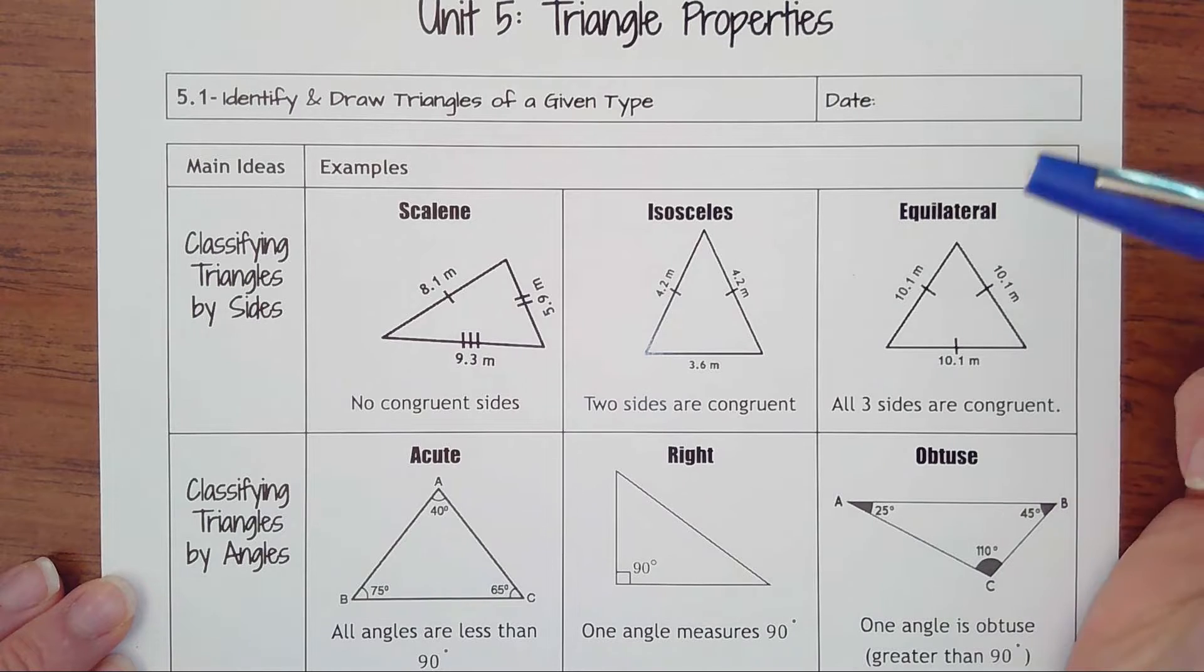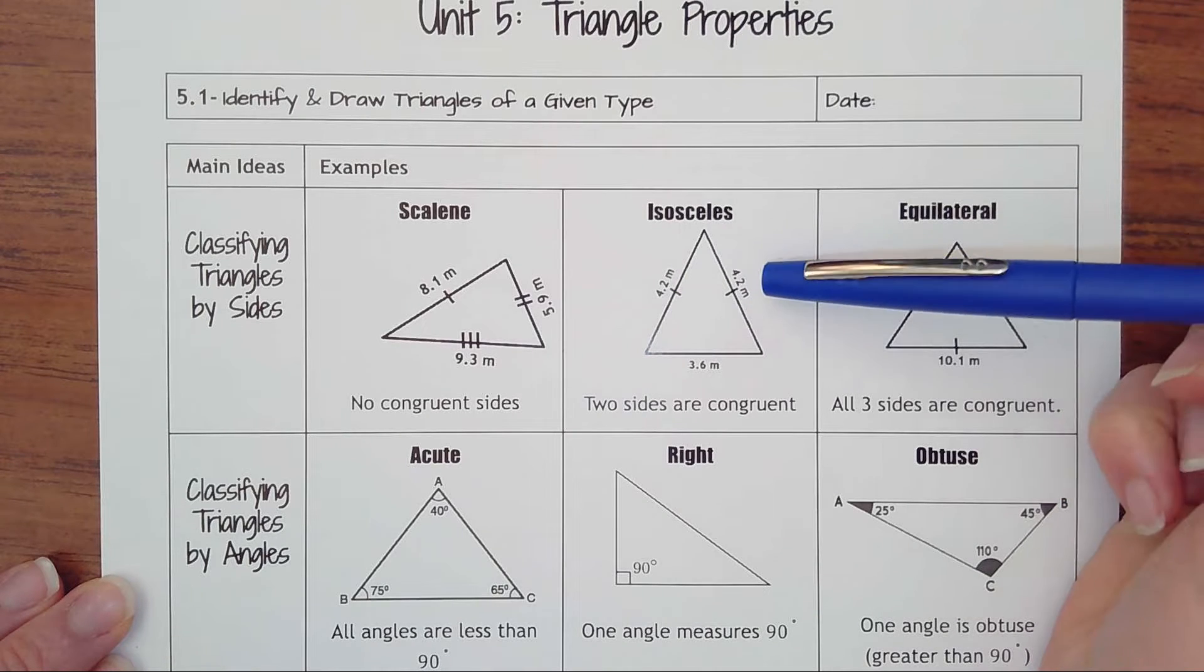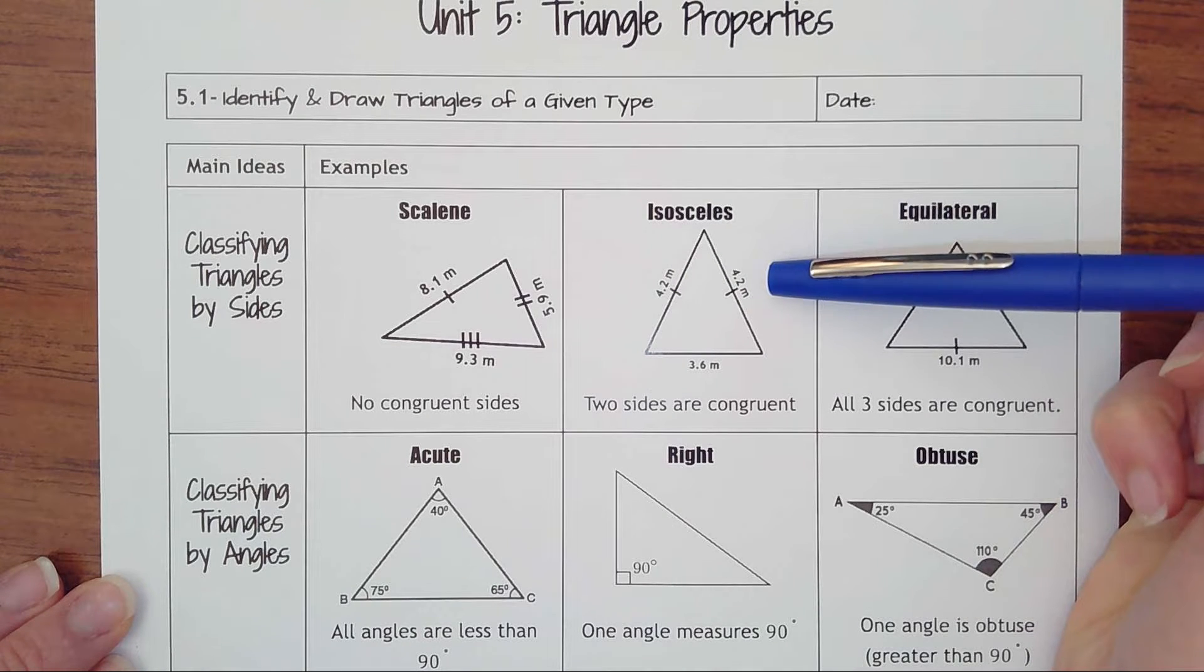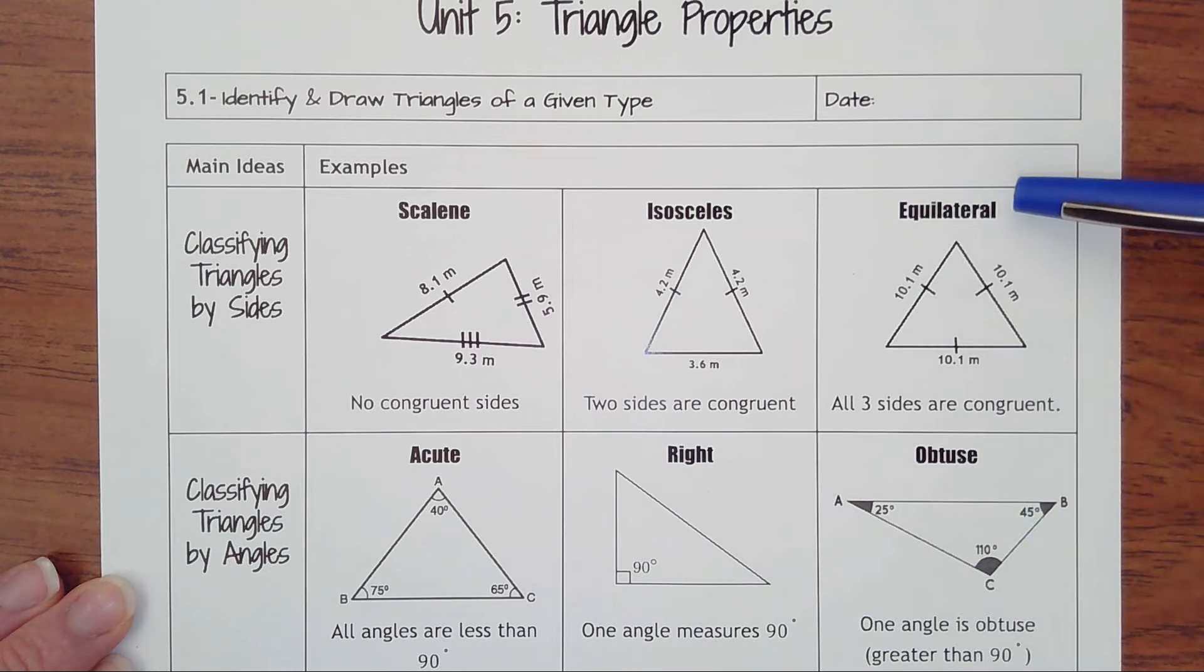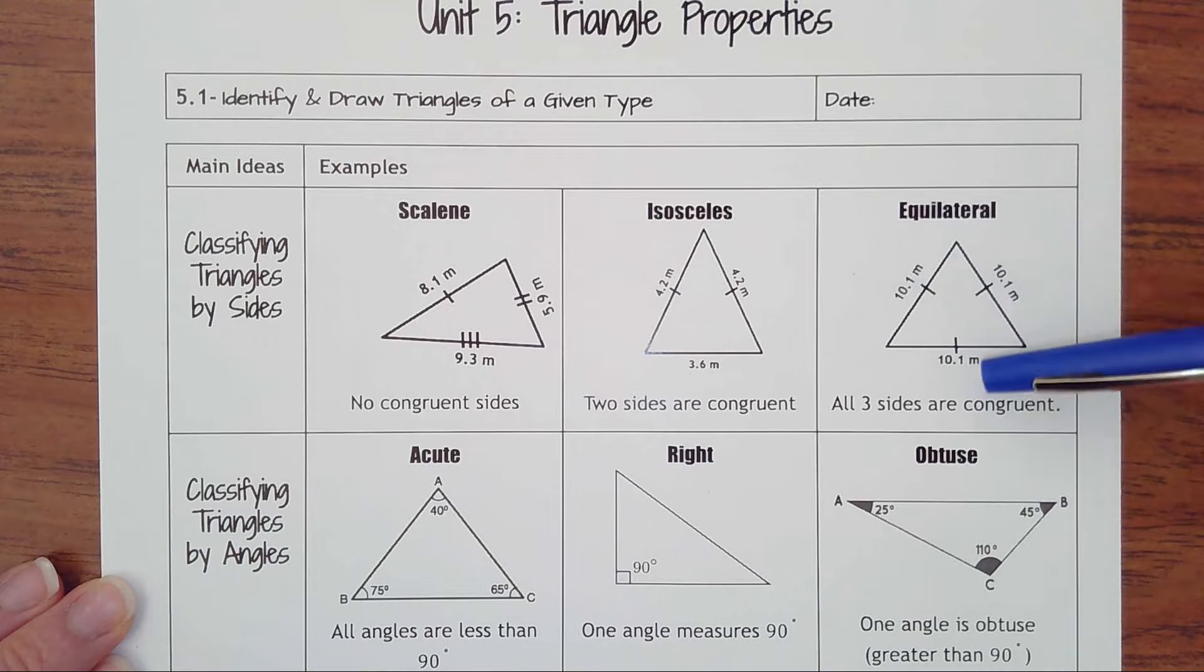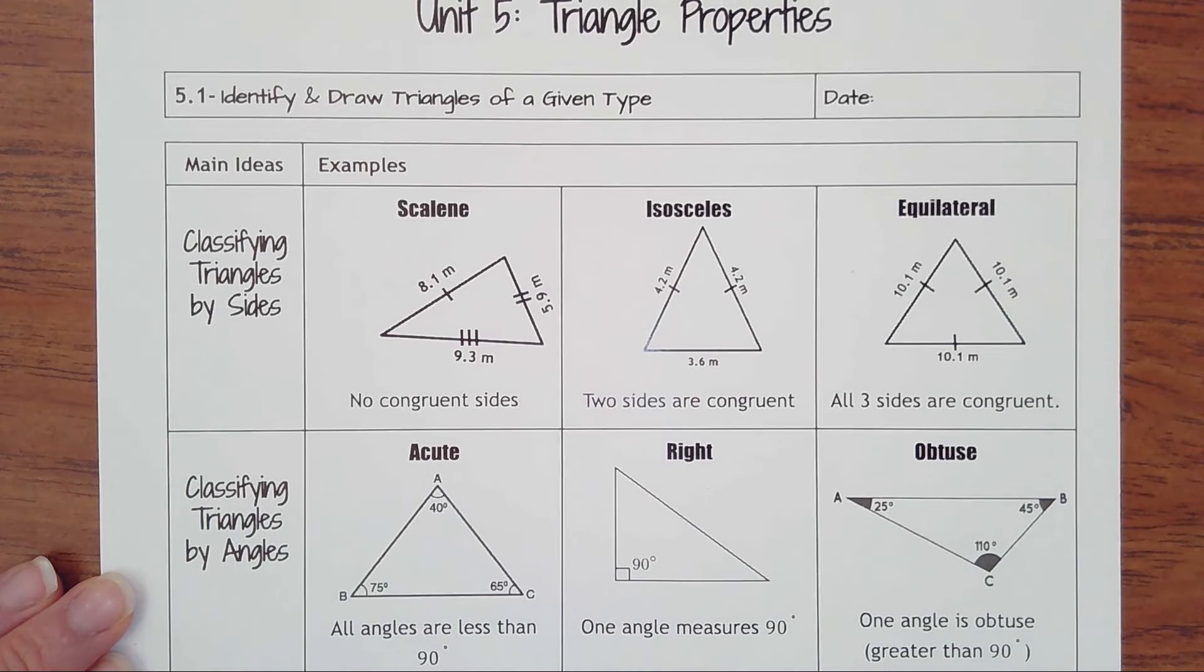Then we have isosceles. In those kind of triangles, two of the three sides are the same length, and sometimes they'll have the little tick marks on those two sides. And then last, we have an equilateral, which means that each side or all three sides are equal or congruent in length.